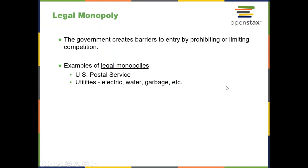Legal monopolies are ones where government creates barriers to entry. The U.S. Postal Service — nobody can deliver first-class mail other than the U.S. Postal Service. Many utilities are legal monopolies; you don't really have competing gas companies, water companies, or sewer companies. Other examples of legal monopolies: in Virginia and Pennsylvania it's the liquor stores — you cannot open a competing liquor store in one of those states. Of course, here in Maryland you can.